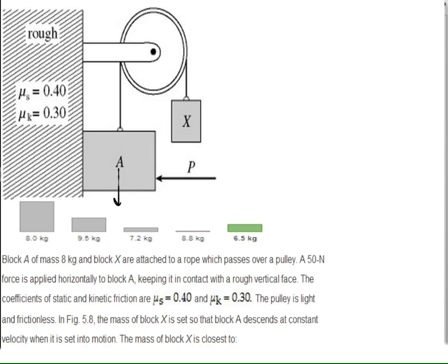Now consider the case where block A has mass 8 kg and the system moves with constant velocity downward for A. Since the surface is rough and the block is moving, the friction is kinetic — directed upward on A. There is tension T for both masses upward, and mX·g downward for block X. With constant velocity, acceleration is zero, so we must balance the forces.